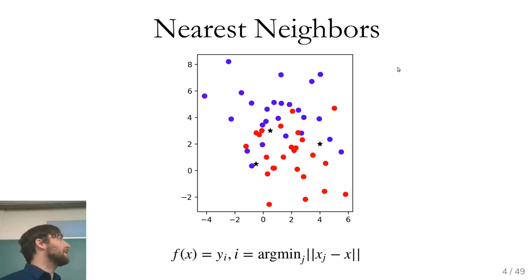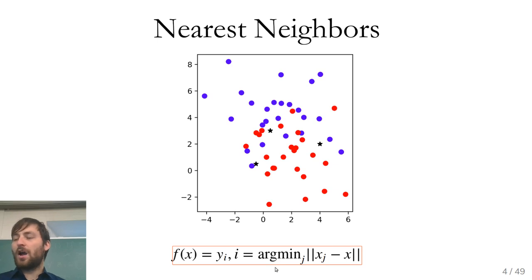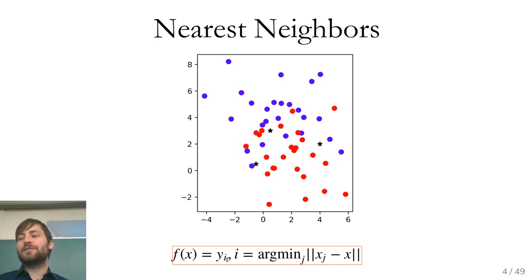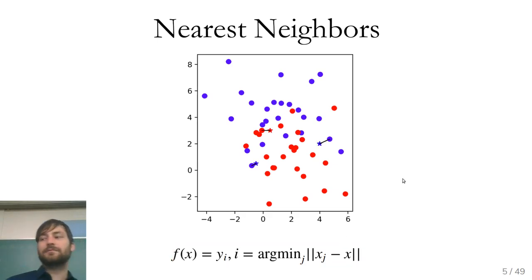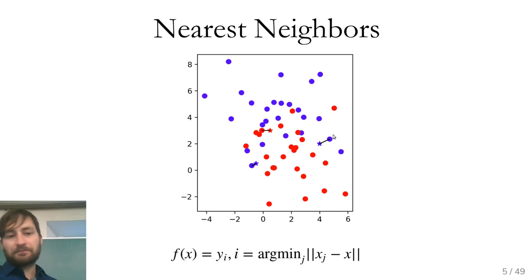The nearest neighbor classifier is very simple: for a new data point x, it returns the label of the closest data point in the training set. You look at the distance between the new point and all training points, and assign it the label of the nearest one. For example, for one star the closest point was red, for another it was blue, and so on — those are the predictions made by the one-nearest-neighbor algorithm.